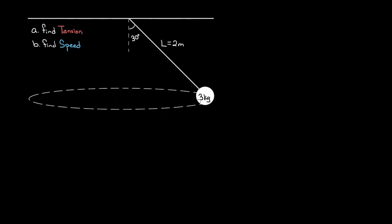I want to show you how to do a slightly more sophisticated centripetal force problem, and this one's a classic. This is the one where there's a mass tied to a string, and that string is secured to the ceiling, and the mass has been given an initial velocity so that it swings around in a horizontal circle.